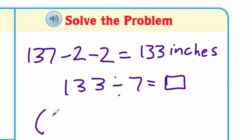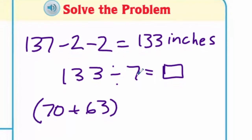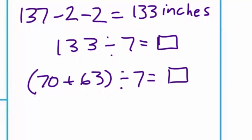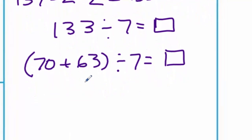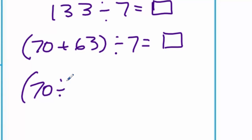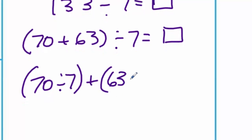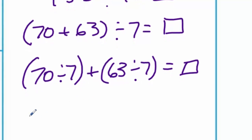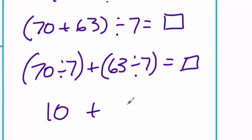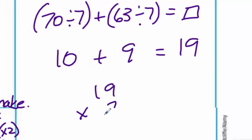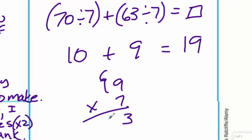I rethink 133 as 70 plus 63. You can see that 70 is a multiple of seven and 63 is a multiple of seven — that's going to help us. So now I divide each one by seven: 70 divided by 7, plus 63 divided by 7. Both are multiples of seven, making this really easy: 10 plus 9, which equals 19.